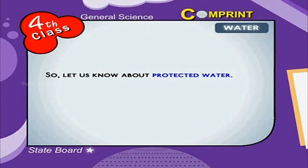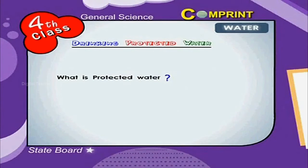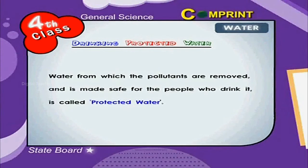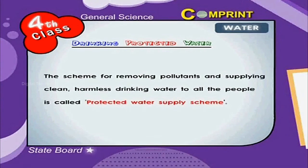So let us know about protected water. What is protected water? Water from which the pollutants are removed and is made safe for the people who drink it is called protected water. The scheme for removing pollutants and supplying clean, harmless drinking water to all the people is called protected water supply scheme.